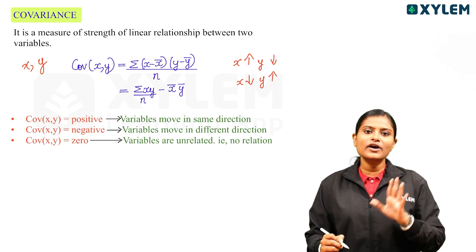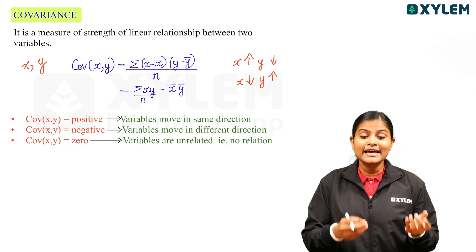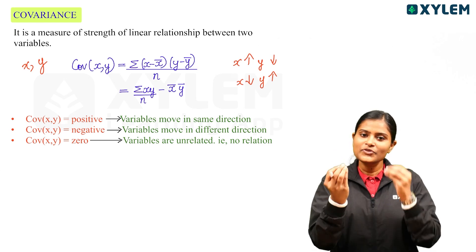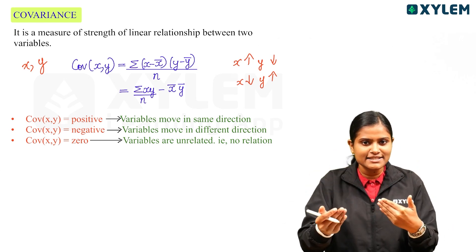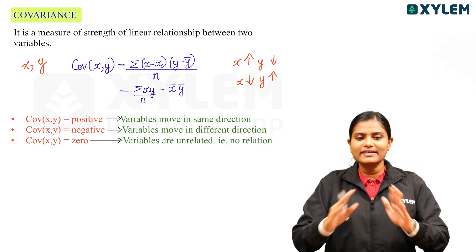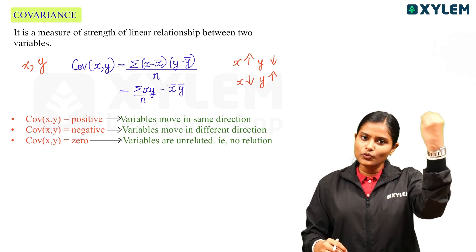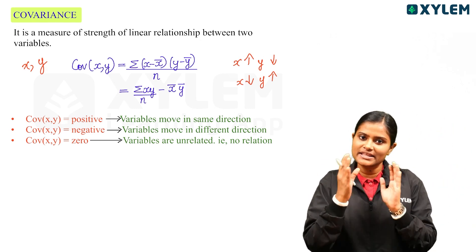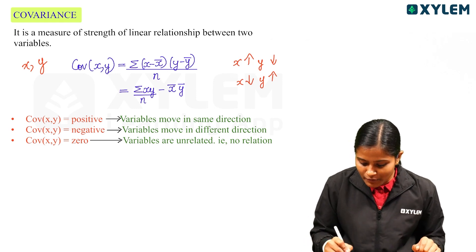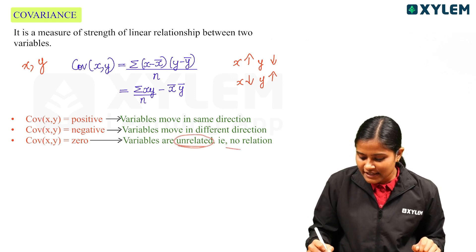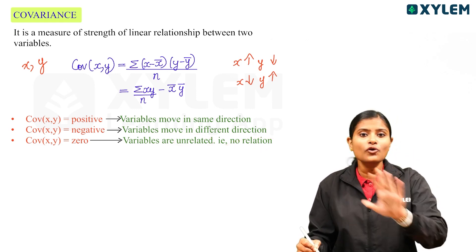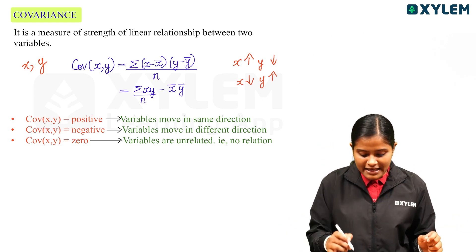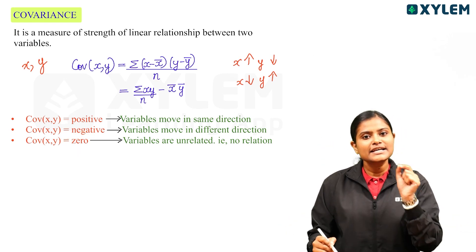If the Covariance is zero, we don't have any linear relationship between the X and Y variables. We say that they are unrelated — they have no relationship. The Covariance value of zero means these two variables have no relationship at all.